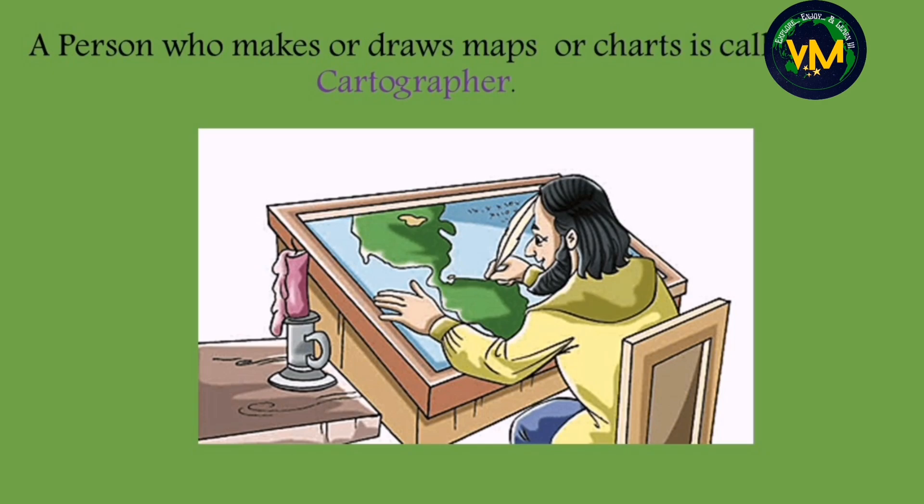Welcome to Part 1: interpretation of topographical maps and map scale. In lower classes we have learnt about globes and maps, their advantages, disadvantages, etc. But do you know who makes these maps and what they do to make them? Just like we call a person who takes photos a photographer, a person who makes or draws maps is called a cartographer, and the art of drawing or designing maps is called cartography.